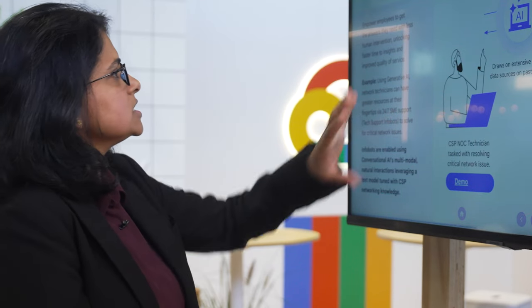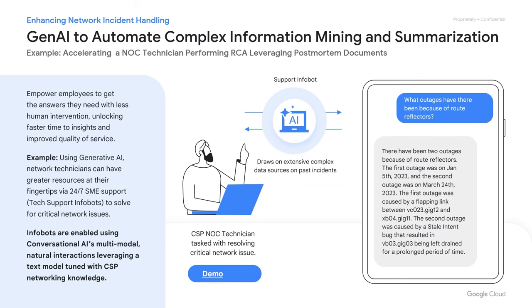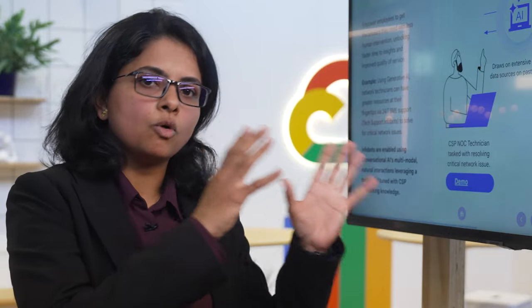We will go through a recording of the session first and I'll explain by pausing wherever needed. This is basically the use case which we are intending — it is mainly automation of complex information mining and summarization. Behind the scenes, it uses LLM models for summarization, and we use Vertex AI Search, which does semantic search. A lot of overhead is taken care of by the existing pre-trained foundation models.